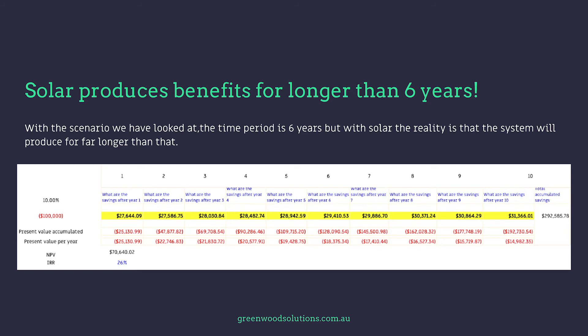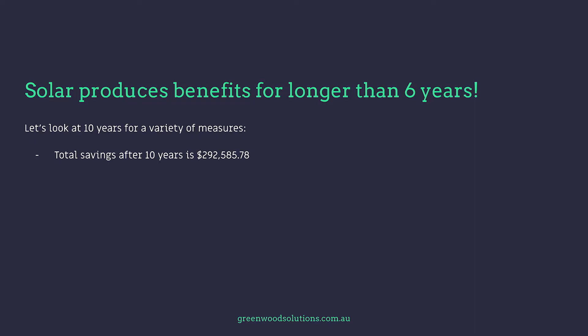With the scenario we've looked at, the time period is six years, but with solar the reality is the system will produce for far longer than that. Let's look at 10 years for a variety of measures. The total savings after 10 years is $292,000. The ROI is 192%, but the annualised ROI is 11.3%.